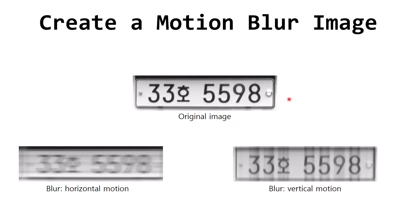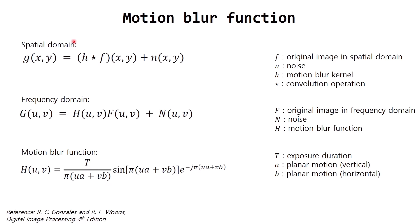In digital image processing we can artificially create a motion blur image. In the spatial domain, we create a motion blur image by a convolution operation — we convolve the motion filter h with our image f to get the motion blur image g. In the frequency domain, we create motion blur image g by multiplying our image in frequency domain F with motion blur function H. The important parameter here is the exposure duration T.